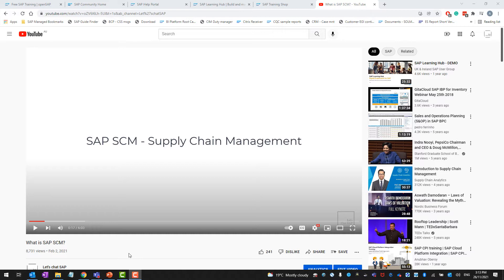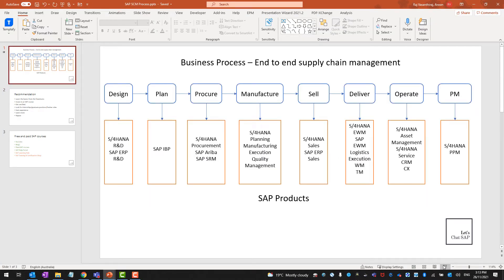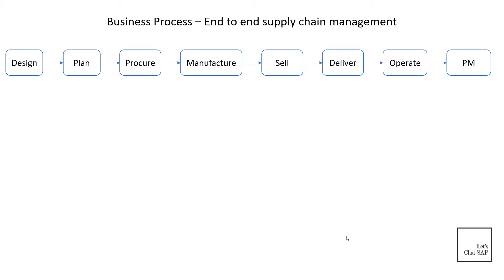So I thought I will make a video about it and provide as much information as possible. Before I start, I'll provide some information about the end-to-end supply chain management process involved in SAP SCM or supply chain management in general. As you can see on the slide, the end-to-end process consists of multiple steps: design, plan, procure, manufacture, sell, deliver, operate, and project management.